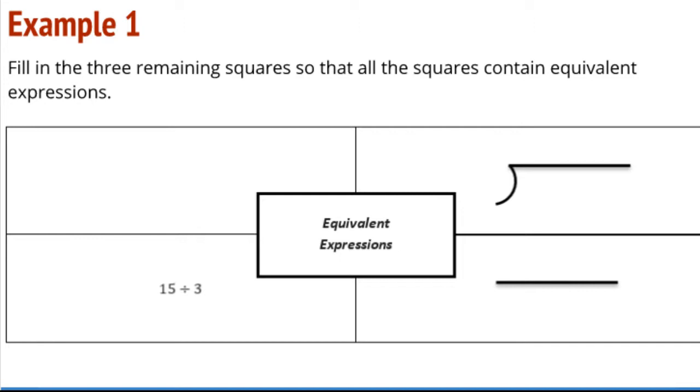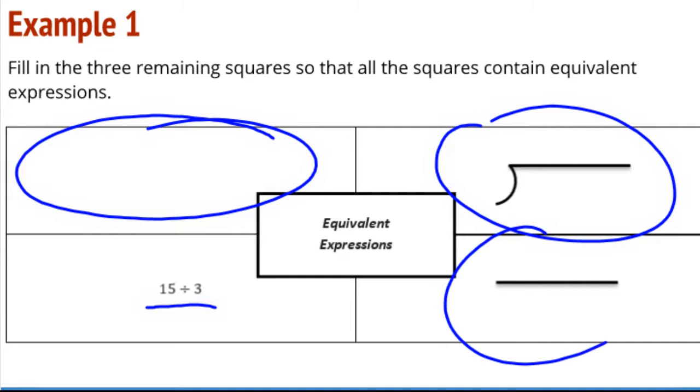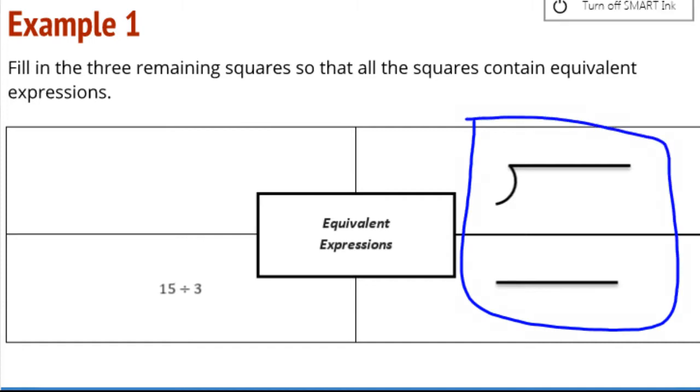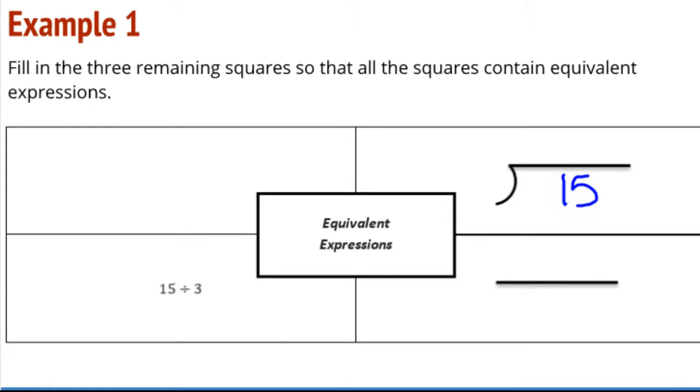So an example to look at here. We have a graphic organizer. We can see that we have an expression here: 15 divided by 3. And we are looking at equivalent ways to write this expression. We're organizing it graphically. So we need something in the box here, something in the box here, and something in the box here. These first boxes on the right hand side probably look pretty familiar to you.